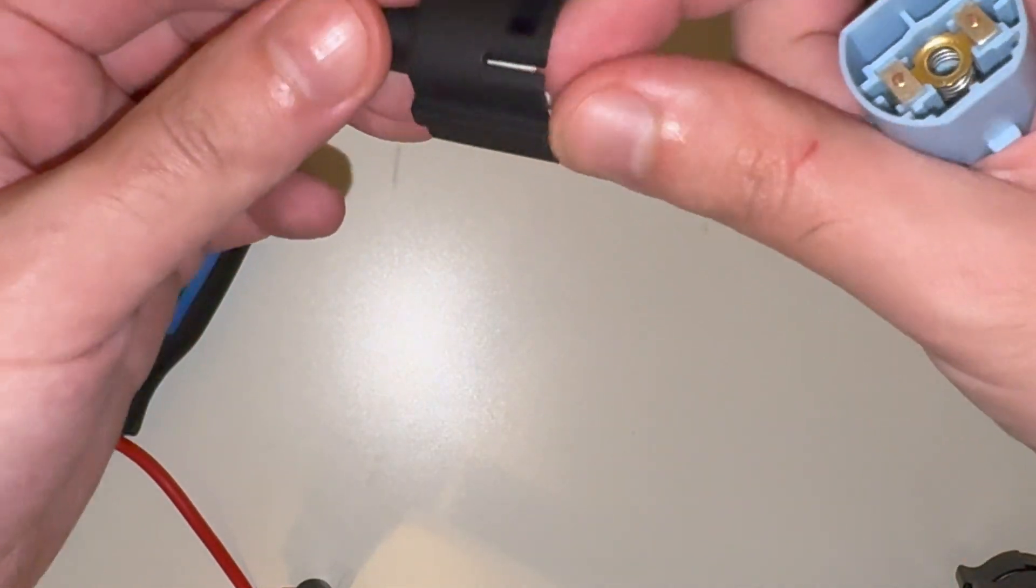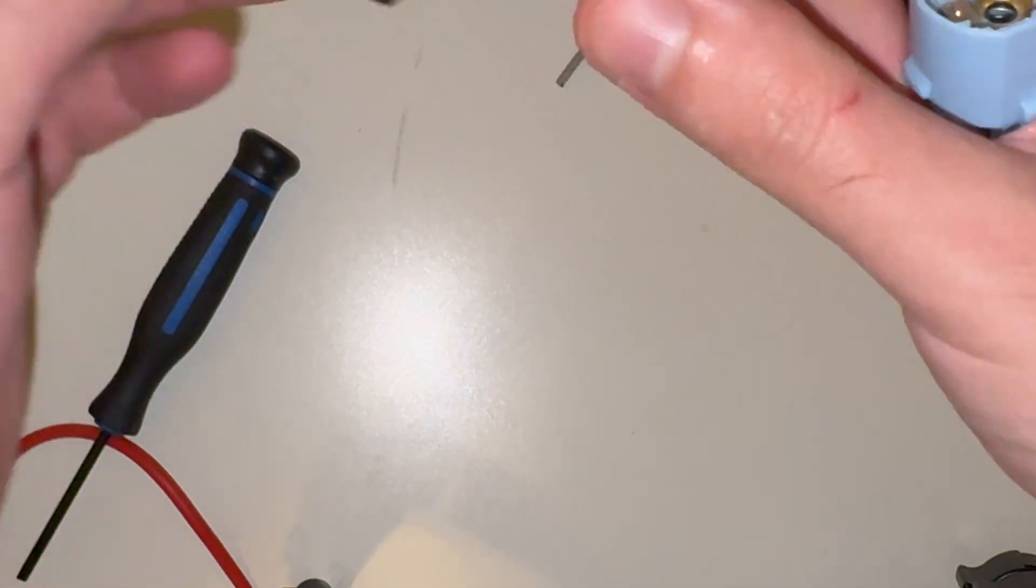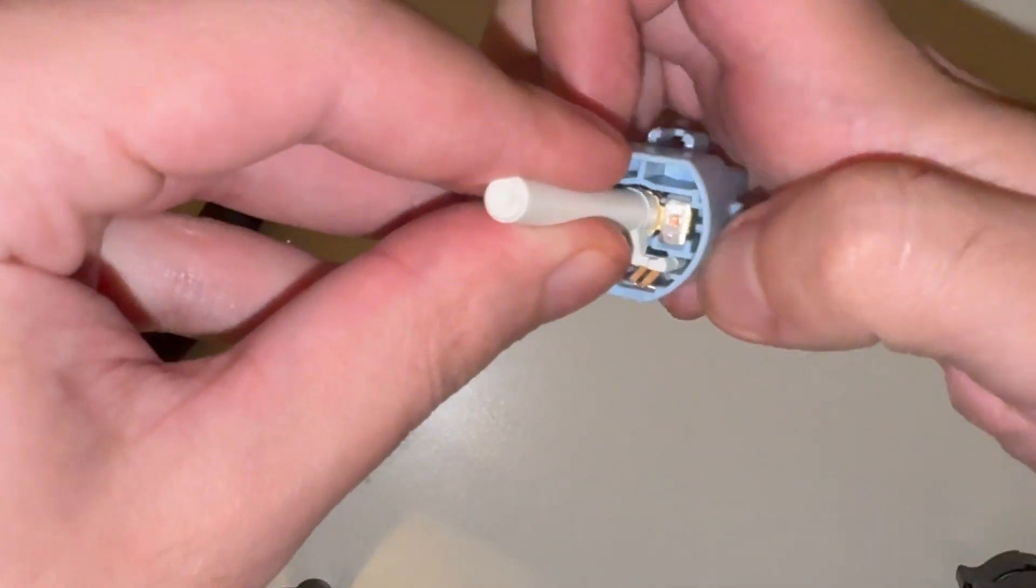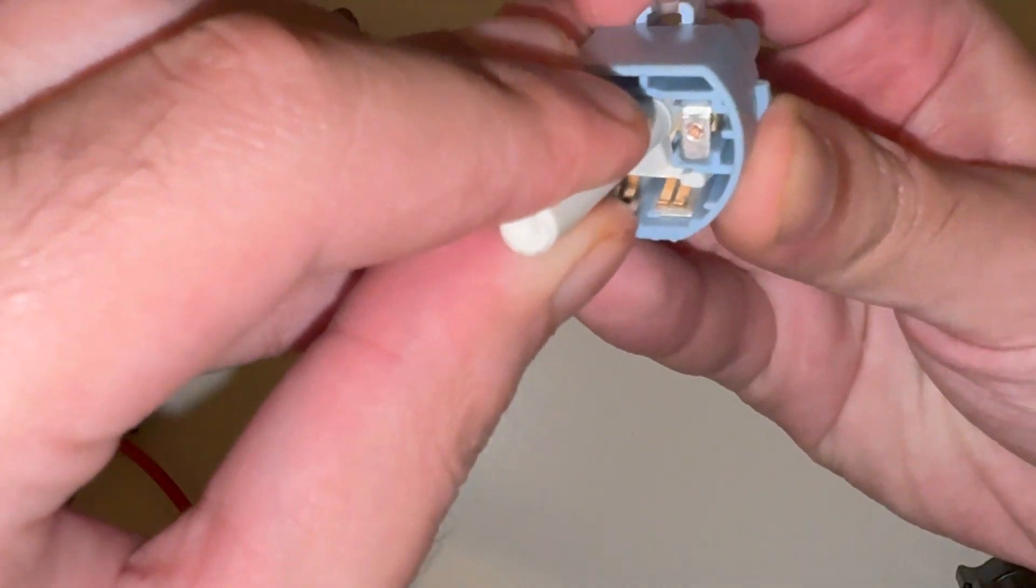Here you can see how the plunger with its own spring in the center breaks continuity across terminals 1 and 2 when the brake pedal is released, and the plunger is depressed by the brake pedal.